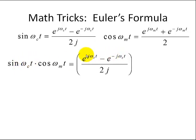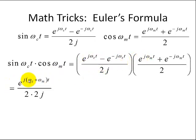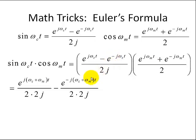For sine(omega_c * t), we have (e^(j*omega_c*t) - e^(-j*omega_c*t)) / (2j), and for the cosine, (e^(j*omega_m*t) + e^(-j*omega_m*t)) / 2. Since we have a common base, we simply add or subtract the exponents. The first term gives exponent omega_c + omega_m. The second term involves e^(-j*omega_c*t) times e^(-j*omega_m*t), with a minus sign from the sine definition. The denominator is 2 times 2j.